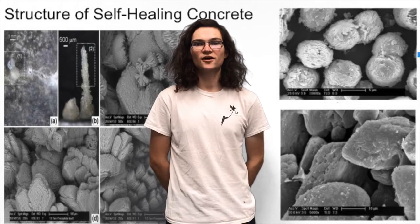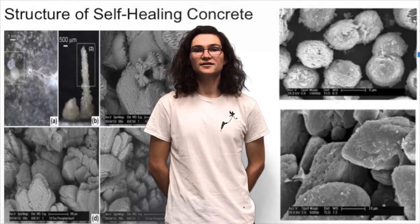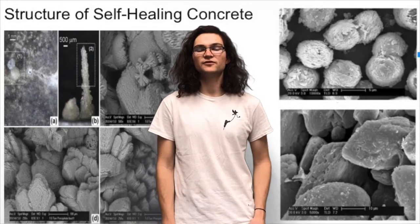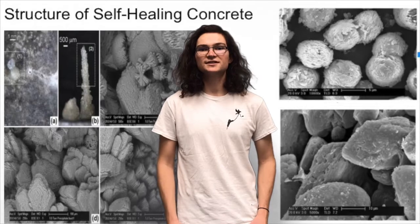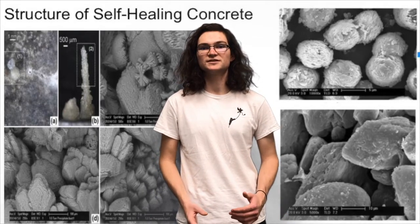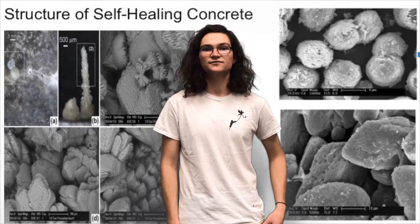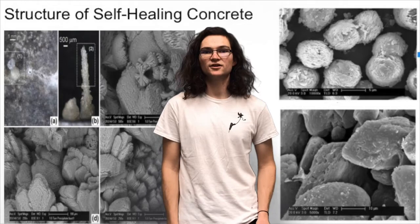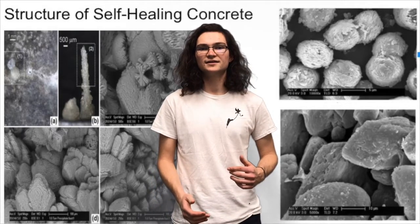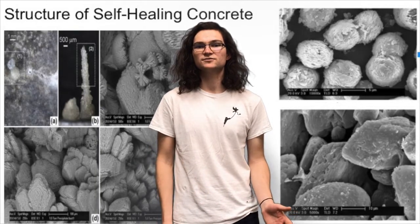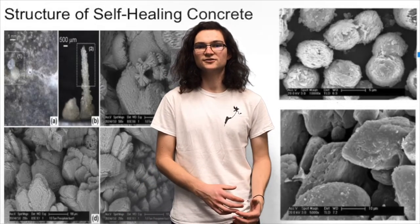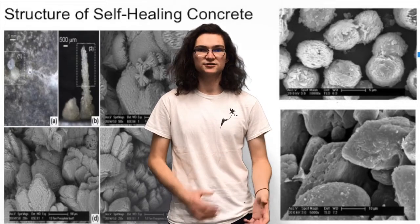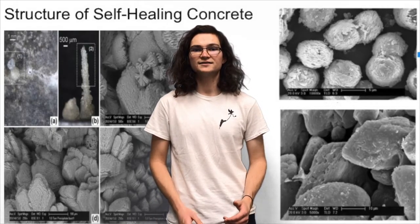Now we'll look at the structure of self-healing concrete. In the image on the right, we see two different structures resulting from two different bacterial additives: one composed of a calcite crystal and one composed of a mixed calcite and vaterite crystal. It's interesting that different bacterial additives created different structures, meaning the overall material will have different properties depending on the additive chosen. In the other image, from the original study, structures are shown at the edges of cracks — importantly, these structures were not seen in the control group, showing that the bacteria were working and producing material to fill the cracks.